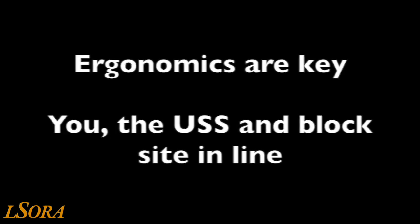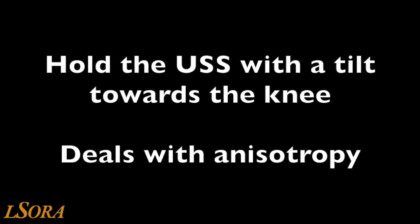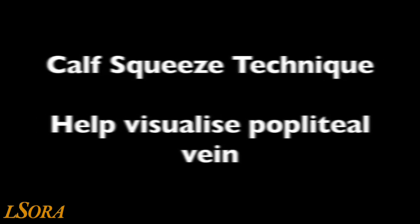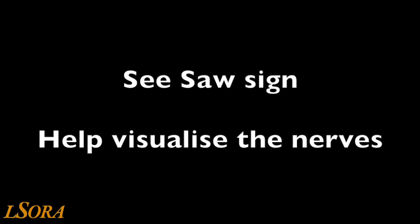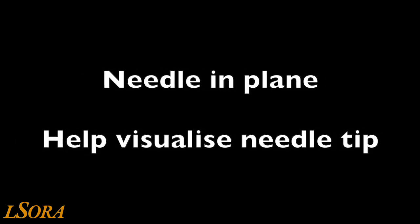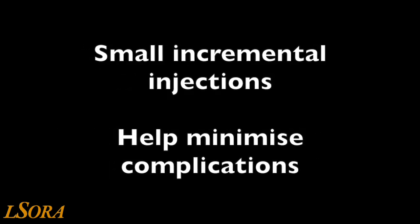Have the ultrasound probe with a slight plantar angulation to account for anisotropy and optimally visualise the neural structures, which are often not lying at 90 degrees to the skin. If required, use the calf squeeze technique to visualise the vascular structures below the nerve, and use the toe wiggle or the seesaw sign to identify the neural structures. We recommend in-plane needling to ensure optimal needle tip visualisation throughout the procedure, and always administer the local anaesthetic in small incremental injections.